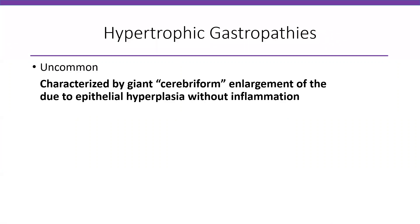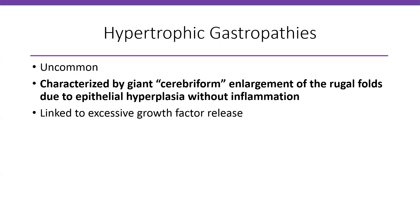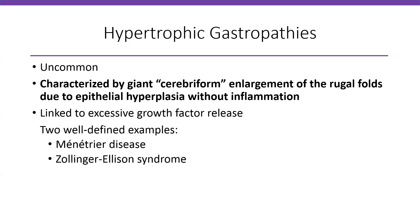Hypertrophic gastropathies are basically characterized by giant cerebriform enlargement of the rugal folds. You have epithelial hyperplasia of the folds and not much inflammation is often seen. It's linked to excessive growth factor release — some growth factor is released and then you have enlargement of the rugal folds of the stomach. There are two well-defined examples: Menetrier disease and Zollinger-Ellison syndrome.